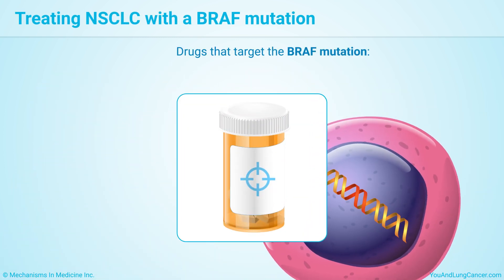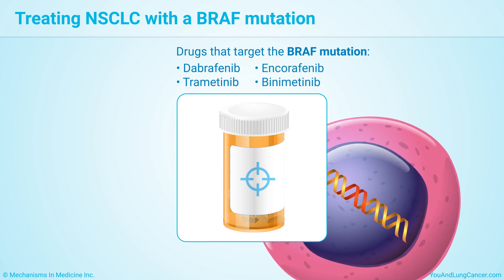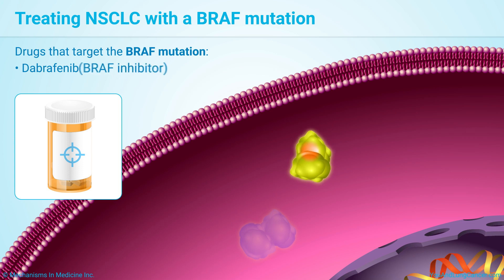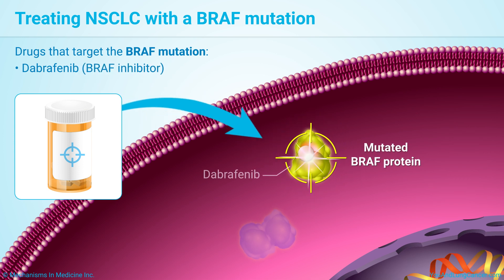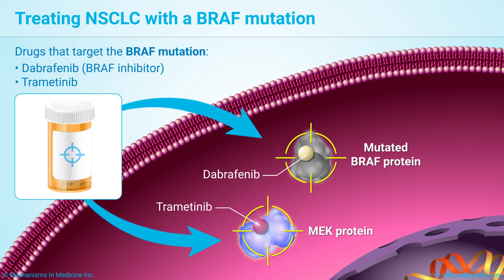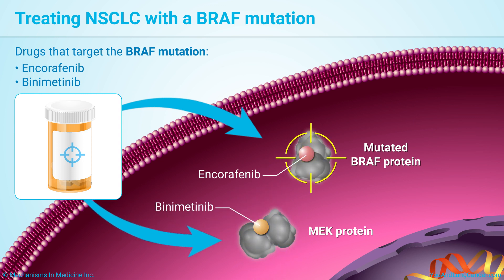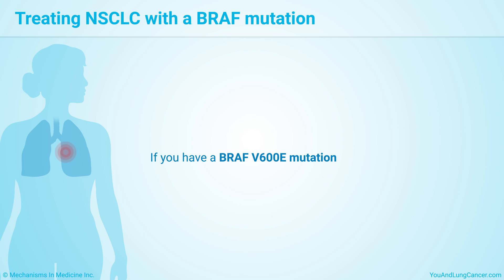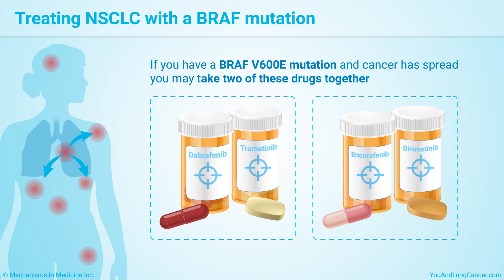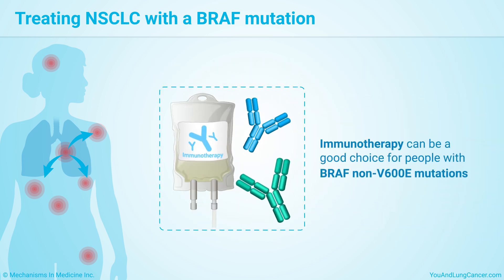Drugs that target the BRAF mutation include dibrafenib, trimetanib, encorafenib, and binimetanib. Dibrafenib is a type of drug called a BRAF inhibitor that directly attacks the mutated BRAF protein. Another protein called MEK is related; the drug trimetanib attacks the MEK protein. The combination of encorafenib and binimetanib also blocks these proteins. If you have non-small cell lung cancer with a BRAF V600E mutation and the cancer has spread, you may take two of these drugs together. Immunotherapy can also be a good choice for people with BRAF non-V600E mutations.